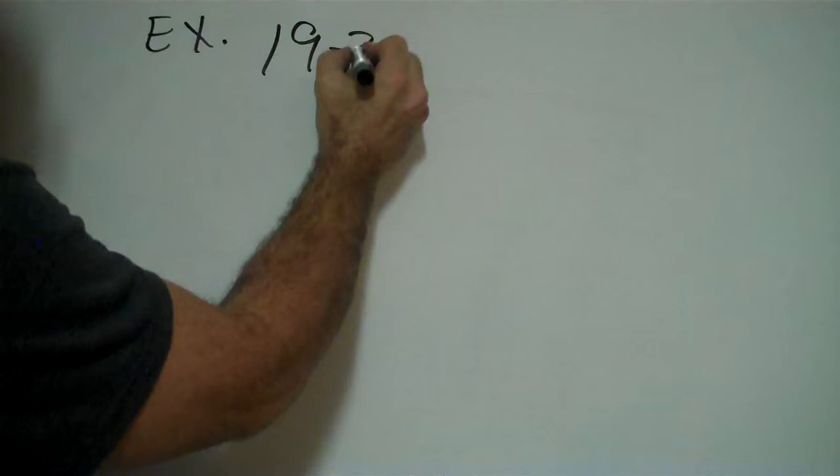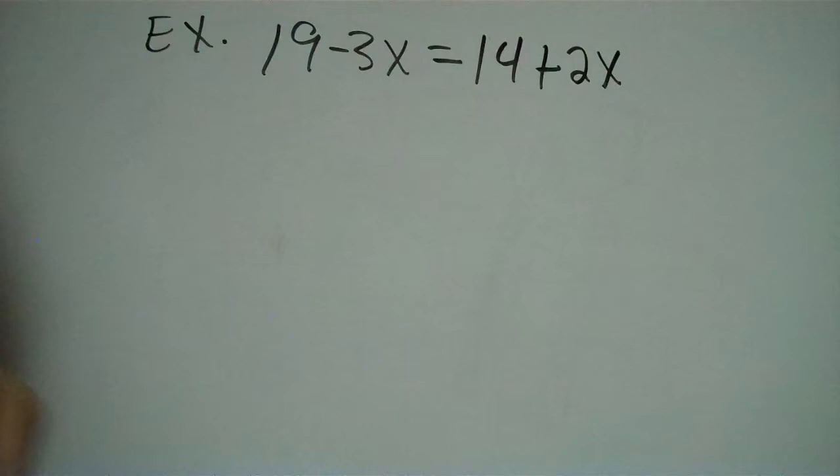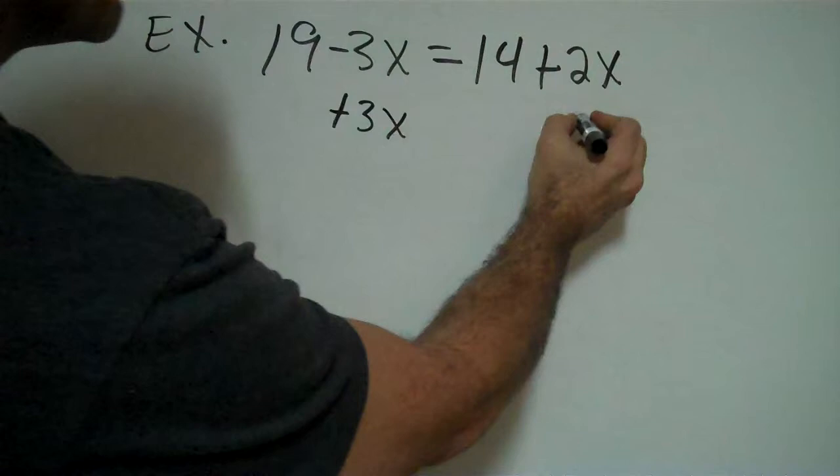Alright, next example. 19 minus 3x equals 14 plus 2x. Remember, like I said, I'm going to start with the variables and I'm going to move the smaller variable. Negative 3 and a positive 2, negative 3 is smaller. So I'm going to move this negative 3 by adding a positive 3x to both sides.